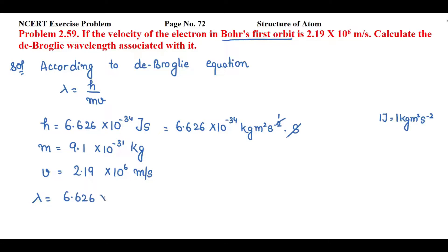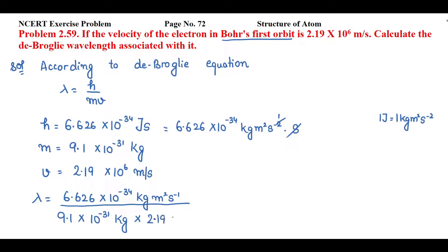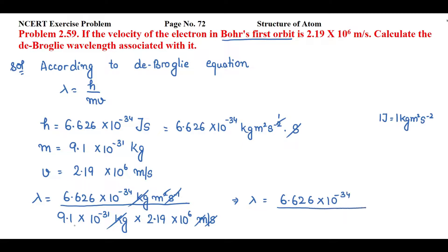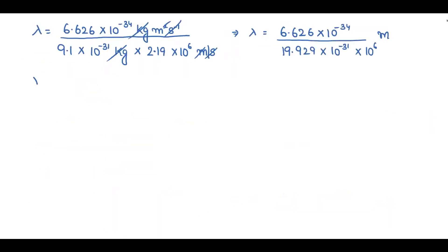Simply putting the values: lambda equals h = 6.626 × 10⁻³⁴ kg·m²·s⁻¹ divided by mass = 9.1 × 10⁻³¹ kg and velocity = 2.19 × 10⁶ m/s. Canceling kg with kg, one meter with meter, and one s⁻¹ with s⁻¹, we get lambda equals 6.626 × 10⁻³⁴ divided by (9.1 × 2.19) with powers 10⁻³¹ × 10⁶, unit remaining is meter only.